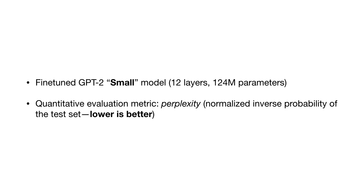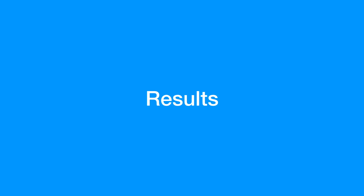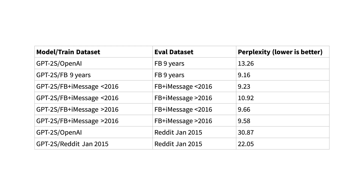So we fine-tuned the small GPT-2 model — that's 12 layers and 124 million parameters. Our quantitative metric was perplexity. From this table, you can see that the model fine-tuned on the chat dataset performs better than the raw OpenAI model on the same dataset, and it's a similar story for the Reddit dataset.